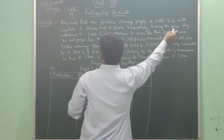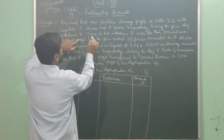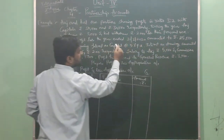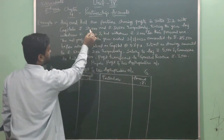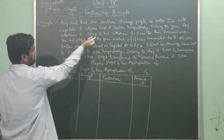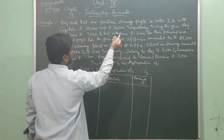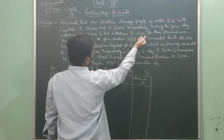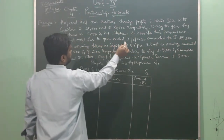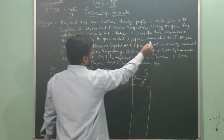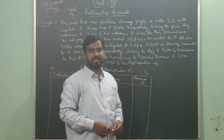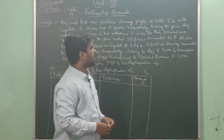During the year, Aaj withdrew rupees 5,000 and Kull withdrew rupees 2,000 for their personal use. So during the year, Aaj's withdrawal from the capital of 50,000 invested will be termed as drawings, and Kull is also withdrawing an amount of rupees 2,000, so his drawings are 2,000. The net profit for the year ending 31st March 2020 amounted to rupees 25,000.